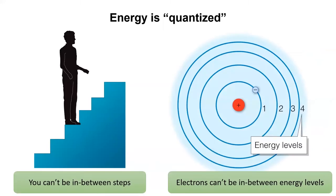Remember from the last lesson that energy is quantized. We represent that with a flight of stairs. The Bohr model reflects the quantized energy of electrons in atoms. An electron can be in energy level one or energy level two, but it can never be in between two energy levels.